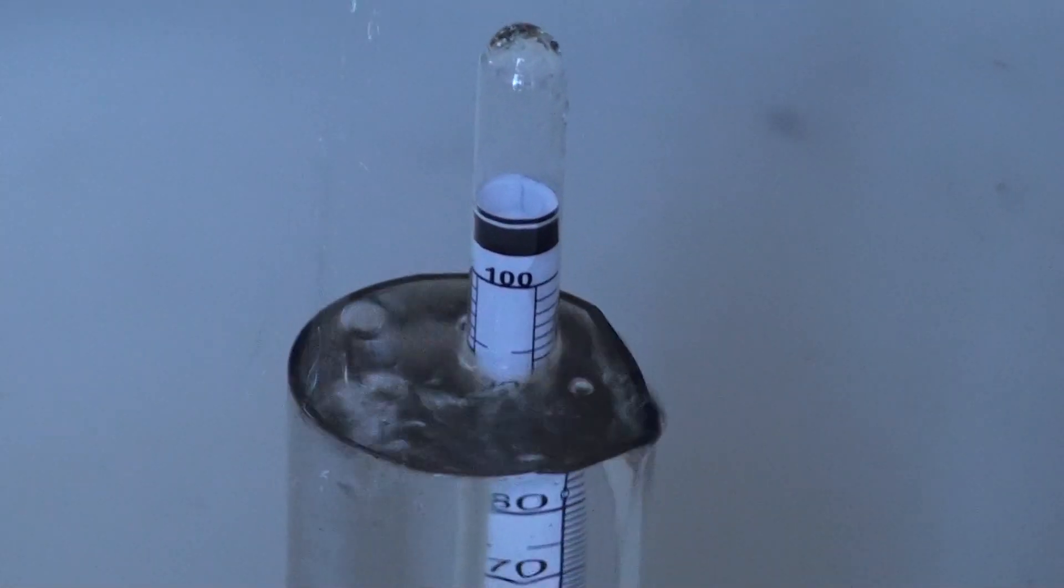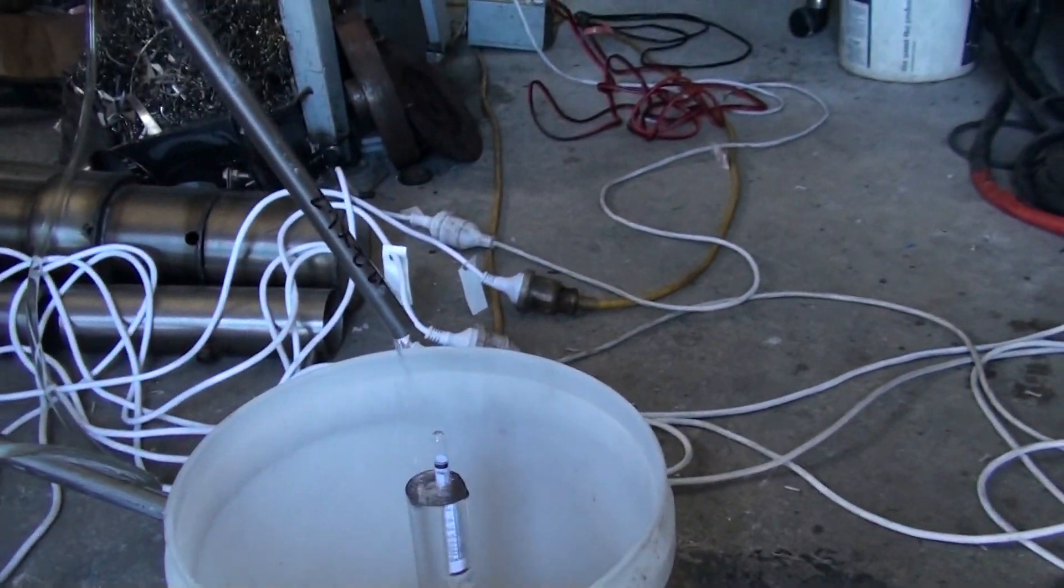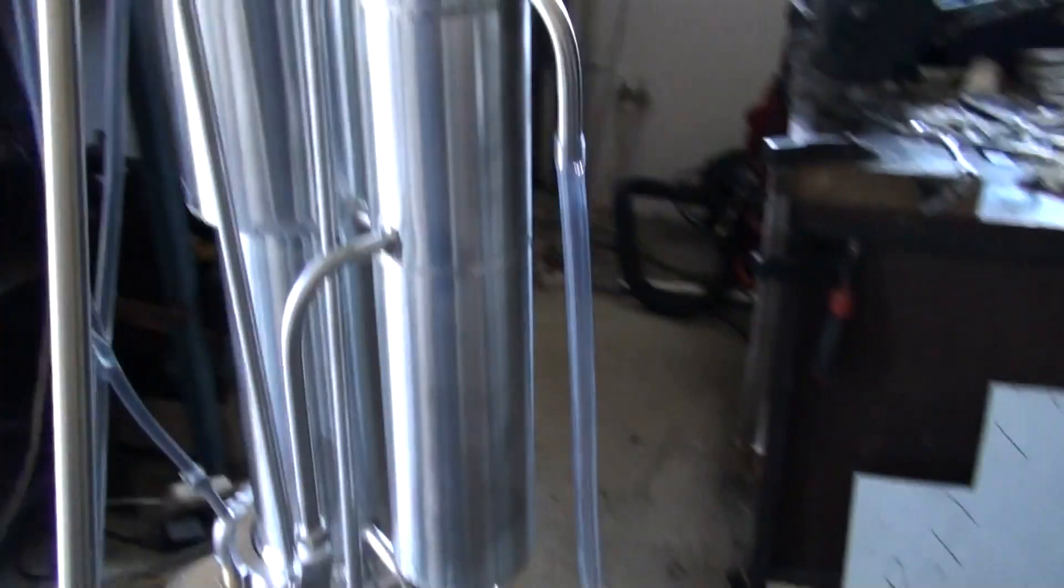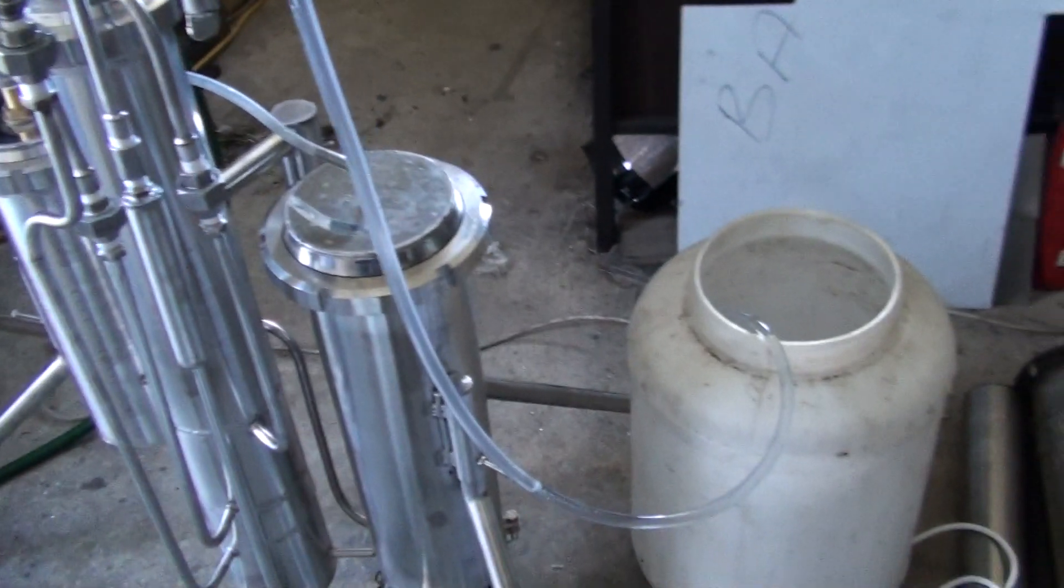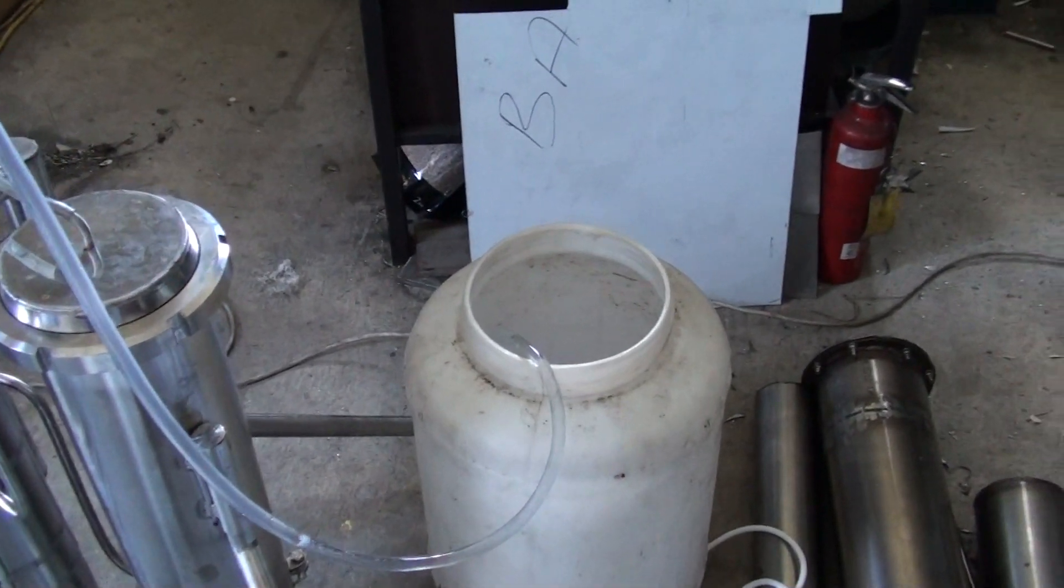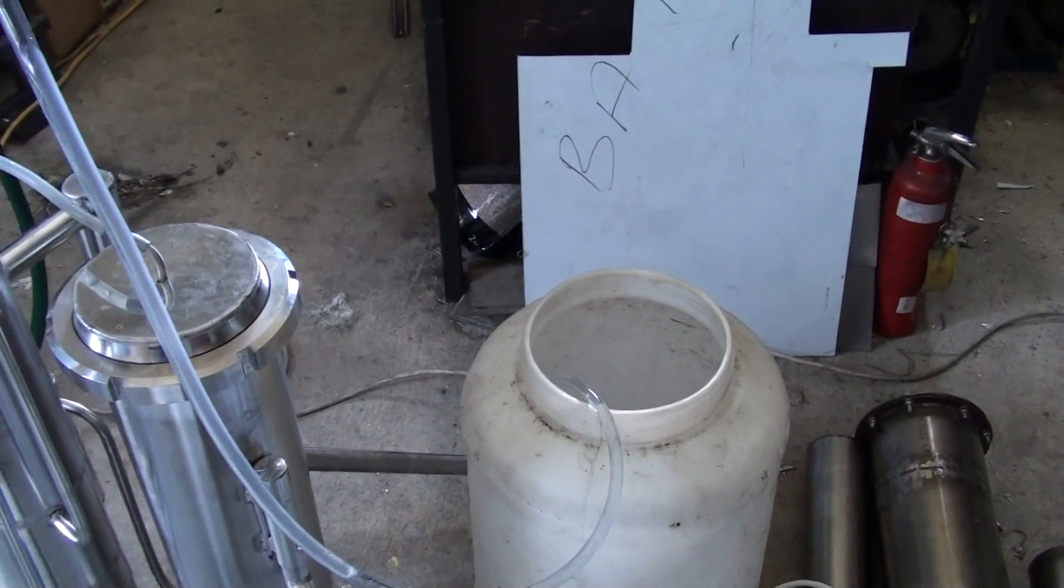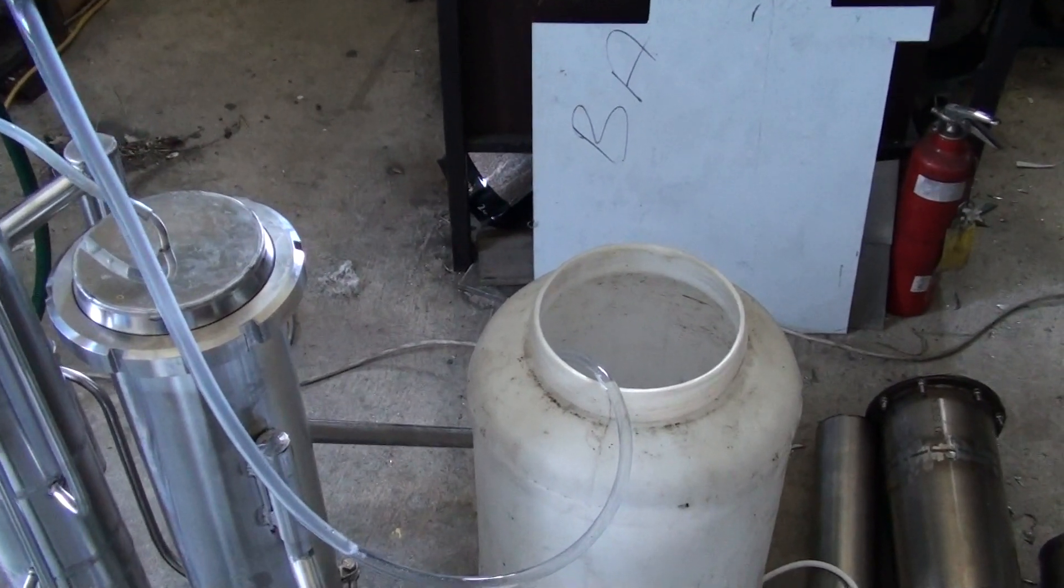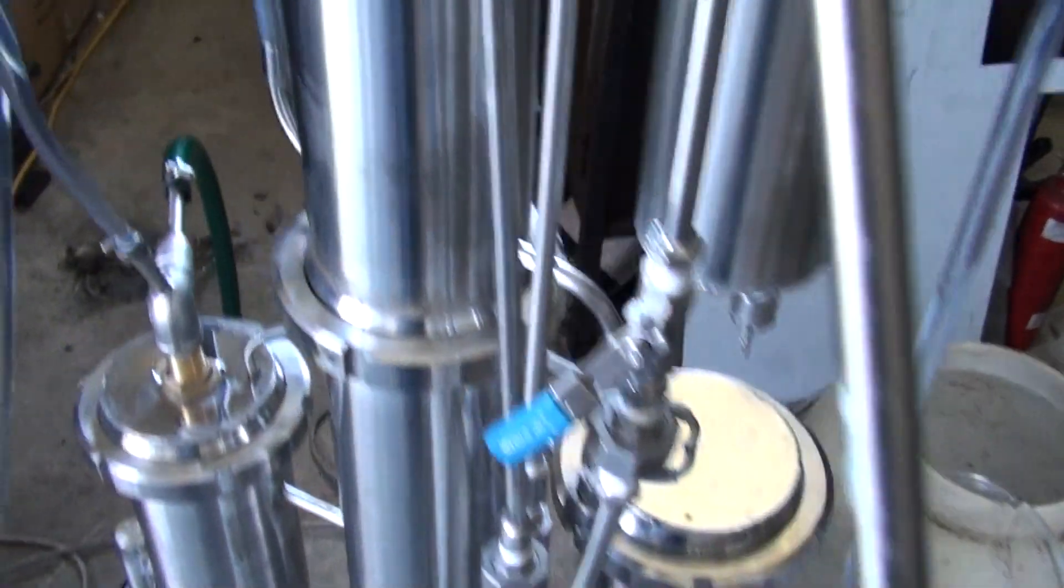Here's the side column. This side column releases the water that's been separated from the spirits and some low spirits. If this water still contains some spirits, it's not a problem, it can be redistilled later, so there's no waste here.